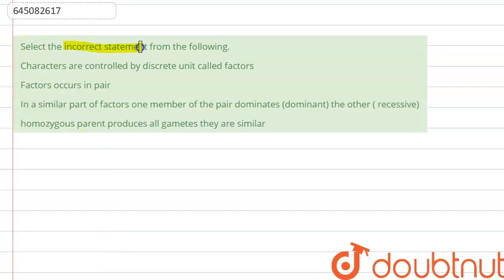incorrect statement from the following. So we have to find out the incorrect statement. Option A: Characters are controlled by discrete units called factors. This is correct according to Mendel. Mendel called the